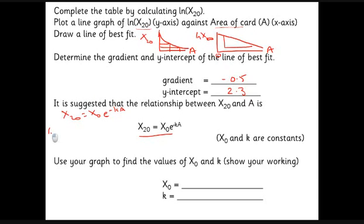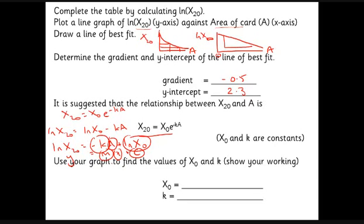Take the logs of both sides. We get log of x₂₀ equals the log of x₀ minus kA. Just swap that around slightly: log of x₂₀ equals minus kA plus the log of x₀. Make that look like y equals mx plus c, and hopefully you can see if we've plotted A as x, then minus k is the gradient and log of x₀ is the intercept.